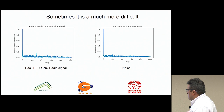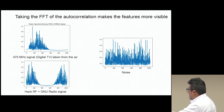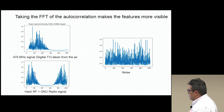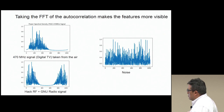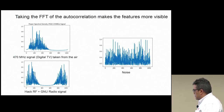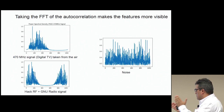That is why I had to think of other approaches. What I did was take the FFT of the autocorrelation, which is the Power Spectral Density (PSD). Now we can see that the features show up — we can now distinguish between the presence of signal and noise. Here, this is noise, and this is the 470 MHz signal, and this is the HackRF plus GNU Radio generated signal. There is an evident difference between these graphs, so it is now easier to tell the difference between signal presence and noise.